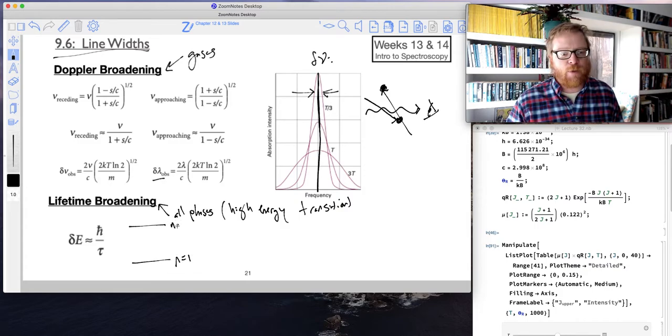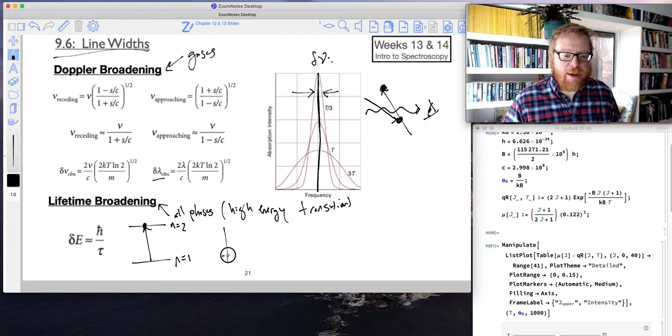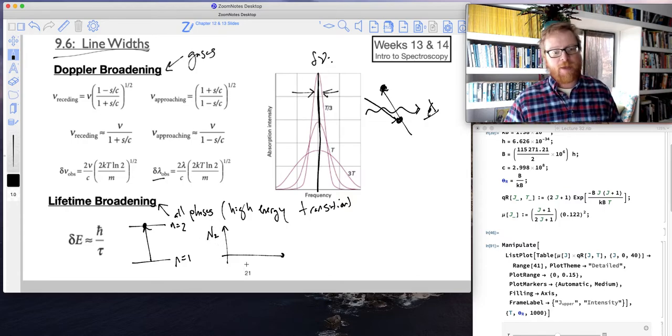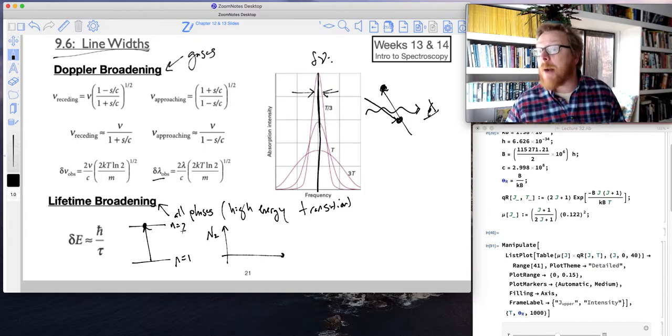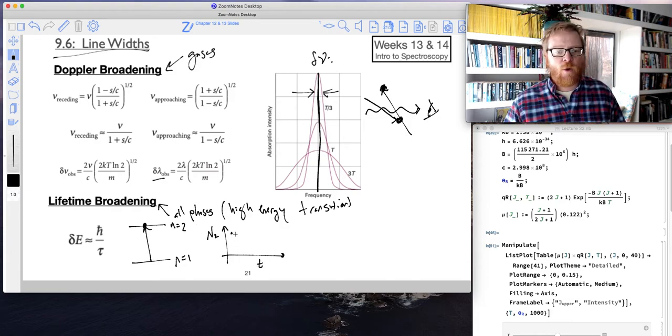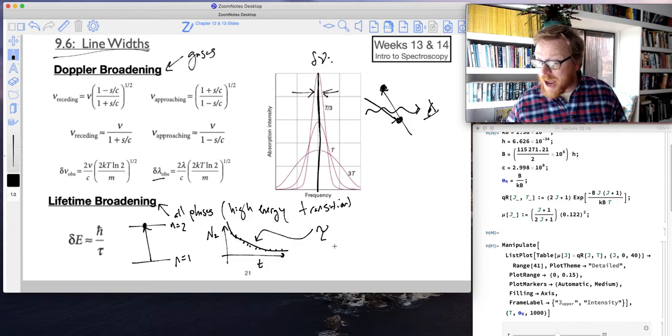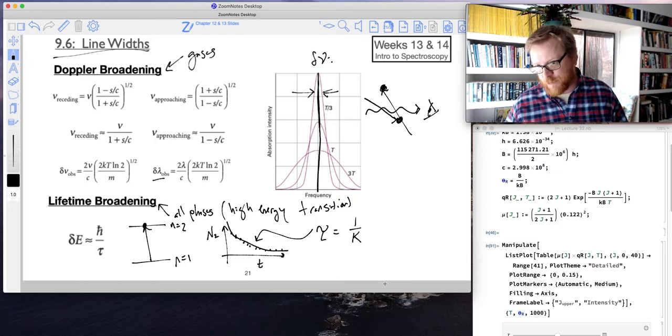So if we think about this like an electronic level, for example, where I've got, I'll just use n to make this simple. Let's say we've got n equals 2, n equals 1, and we promote some electron to this state. If we could keep track of the population of molecules in state 2 over time, we would see that it follows a first-order decay. So all excited states decay via a first-order process. And so from that first-order process, we can get tau, the lifetime, which hopefully you remember from your kinetics. The lifetime of any first-order process is just 1 over the rate constant for that process.